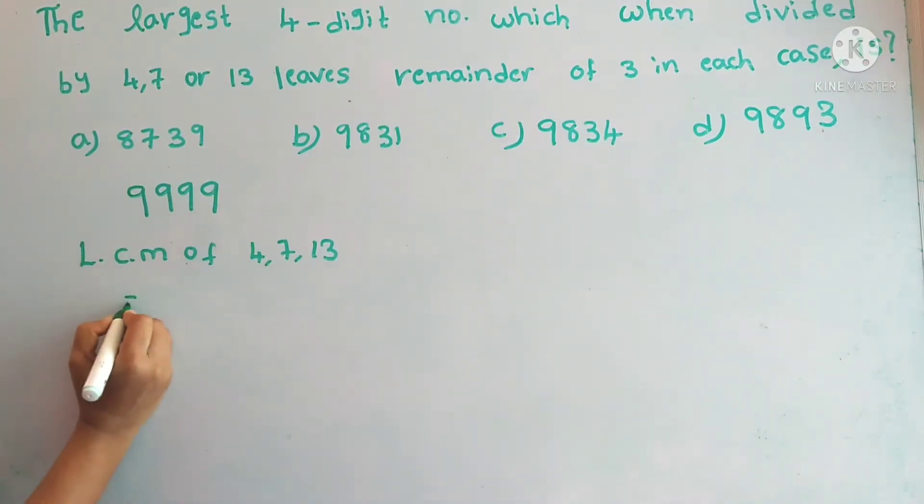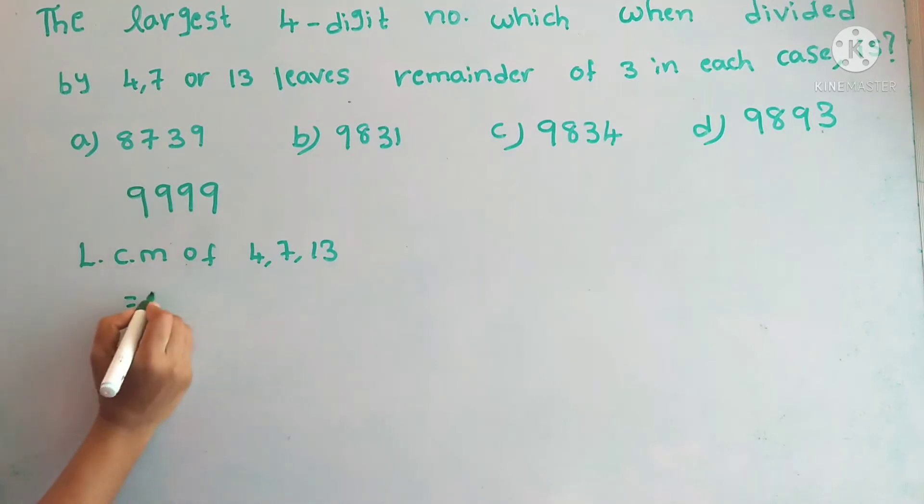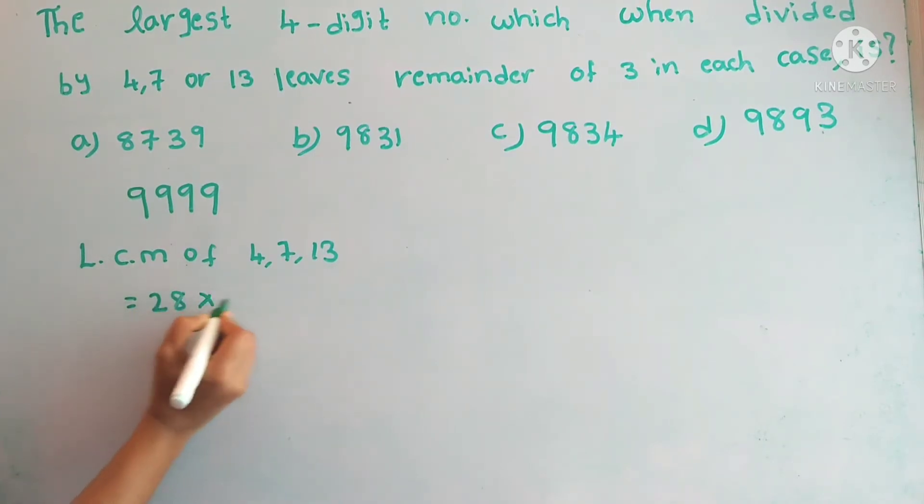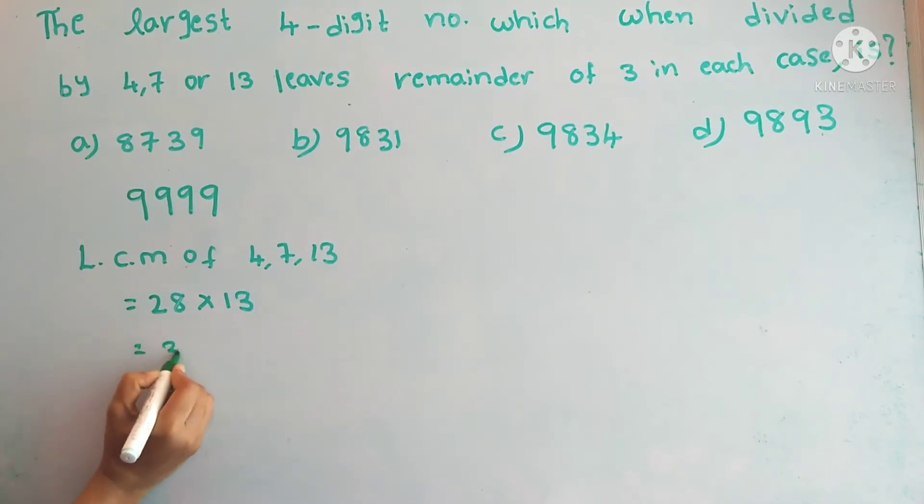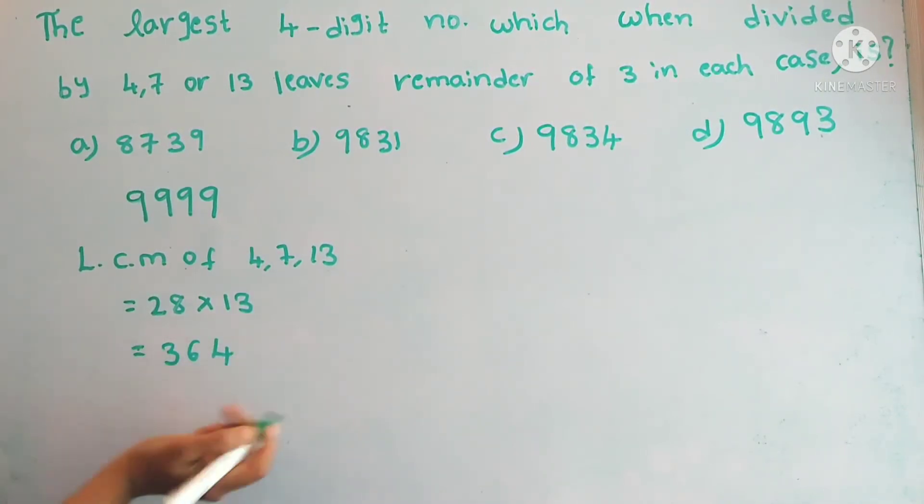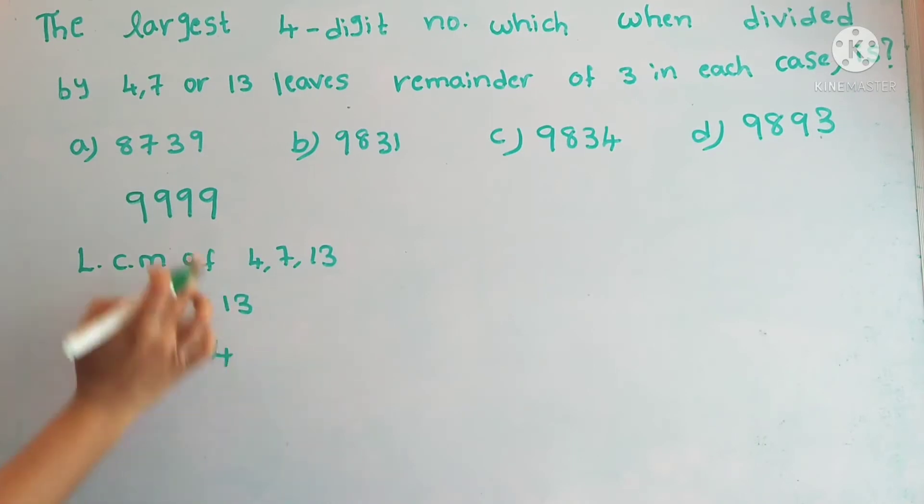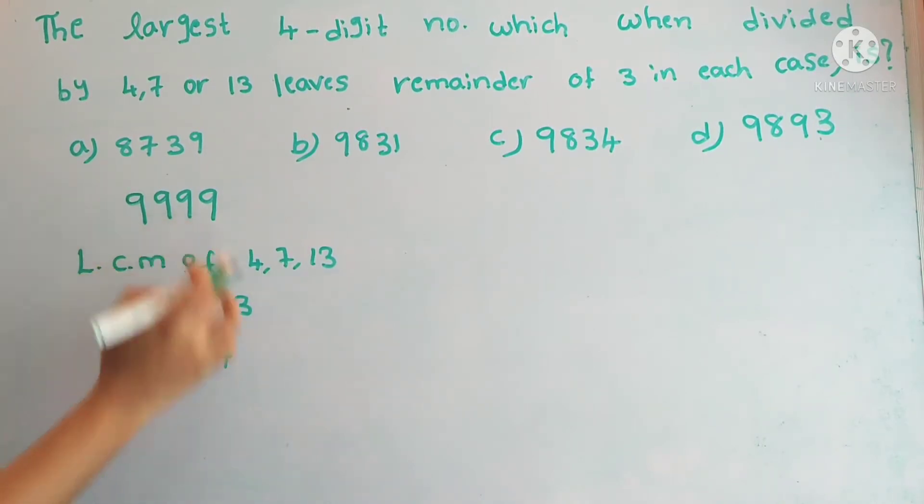So the LCM of these three numbers: 4, 7 is 28, and 28 into 13 would be 364. Now we need to divide 9,999 by 364.